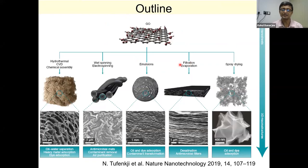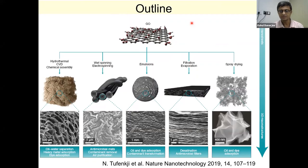I will start my talk from a different outline — this is not a MOF or COF slide. This is a slide on graphene oxide, where this group has nicely described that you could take these two-dimensional materials and eventually construct different kinds of morphologies or mesoscopic structures. Each time you construct something like that, you have an opportunity to look into a diverse type of applications.